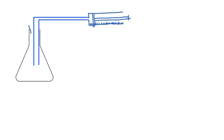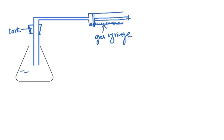The conical flask should be a sealed one. I am sealing it with a rubber cork, which I label as a cork or seal. We label it as a gas syringe, and the tube carries the gas. The flask contains dilute HCl — not concentrated, so we write it as dilute HCl.